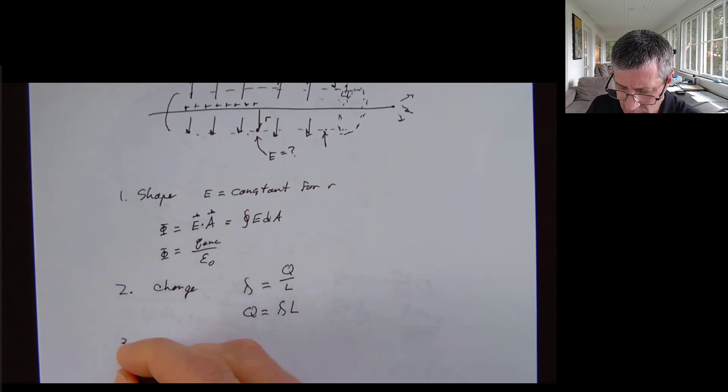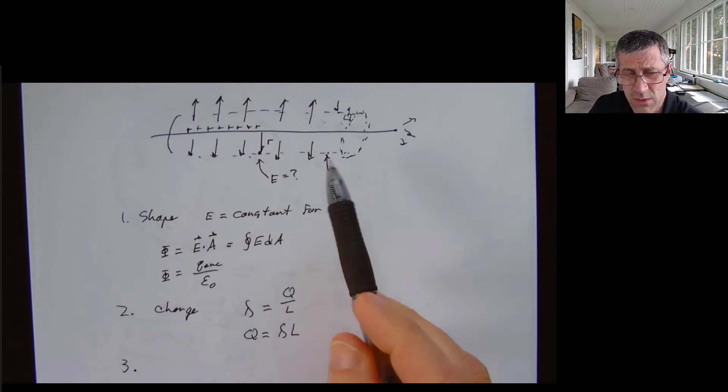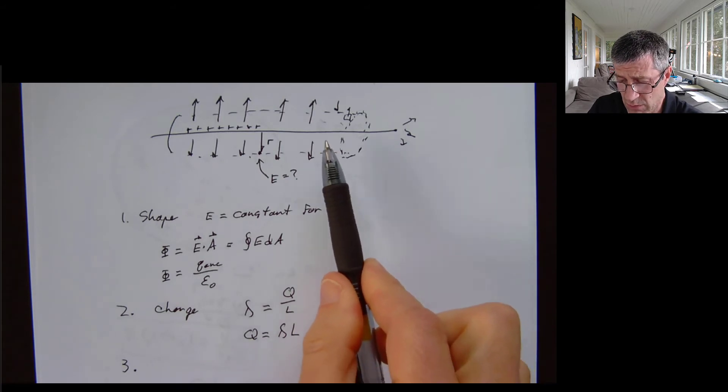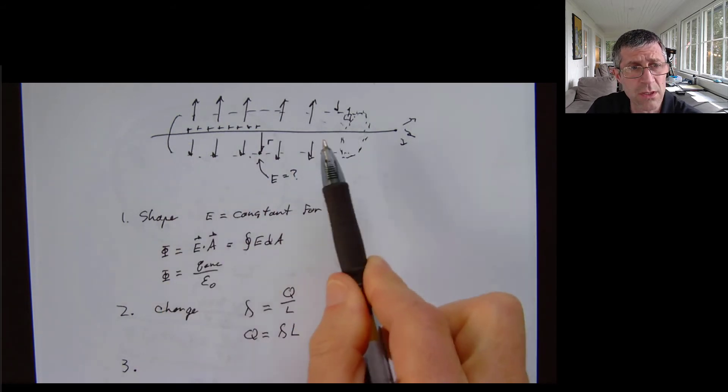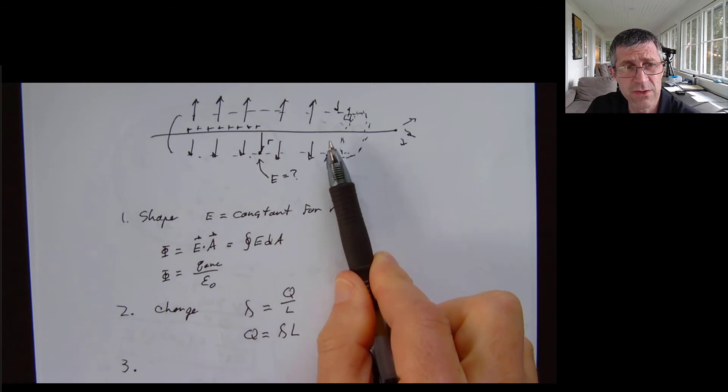Second thing that I have to worry about is my Gaussian surface area. So always, my integration is always going to be simple in these. I want to add up what's all the area over the total surface area of this cylinder?